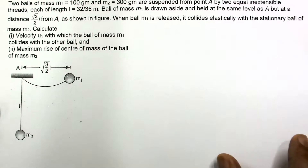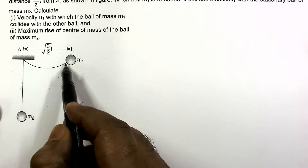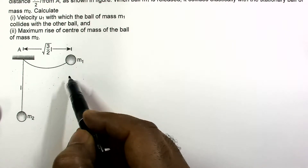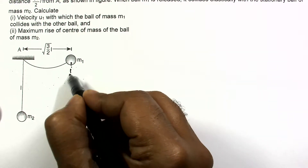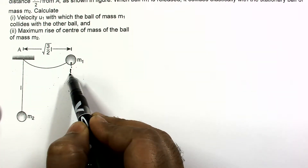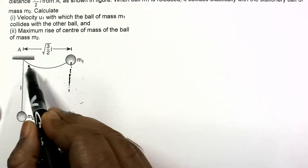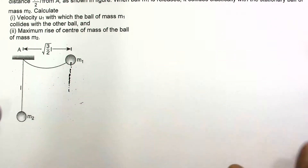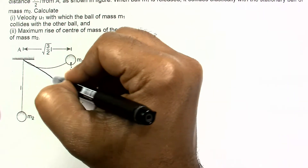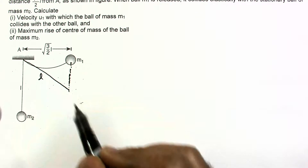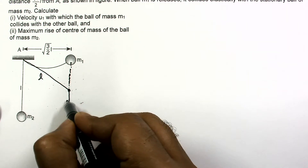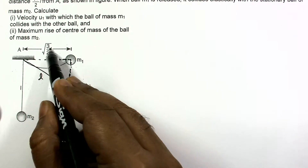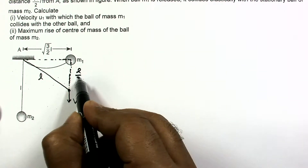Initially the string is slack — there is no tension — so M1 falls vertically downward. As it falls, the distance from point A to M1 keeps increasing. When this distance becomes equal to L, the string suddenly becomes taut. At that moment, the horizontal distance from A is √3L/2 and the string length is L, so by Pythagoras the vertical drop is L/2, giving an angle of 60 degrees.